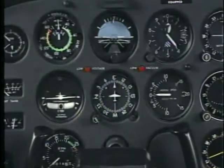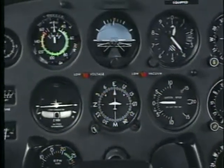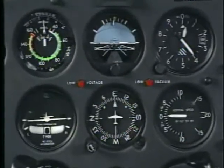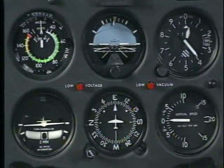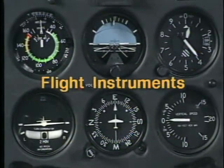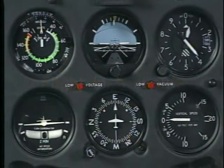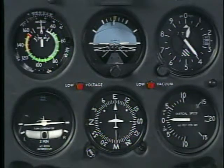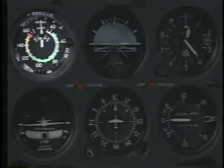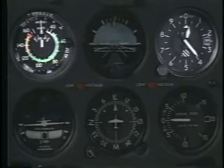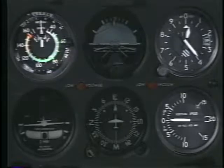There are six basic flight instruments which are designed to provide you with the information you will need to control the airplane. Let's begin by looking at the pitot-static instruments. The pitot-static instruments include the airspeed indicator, altimeter, and vertical speed indicator.